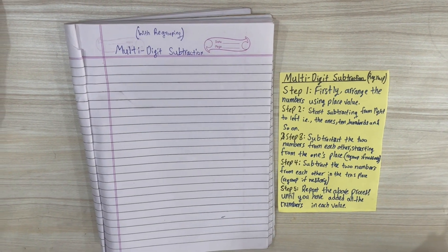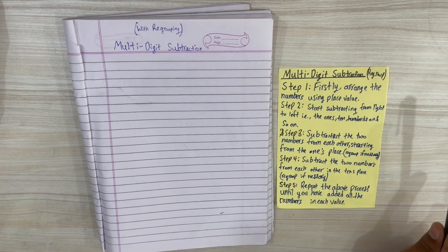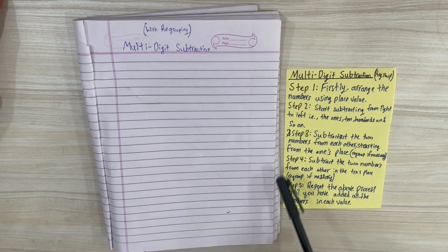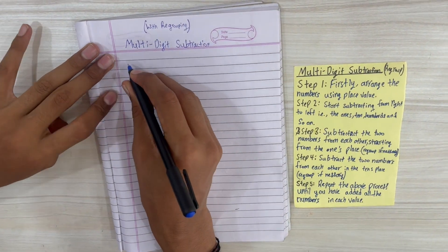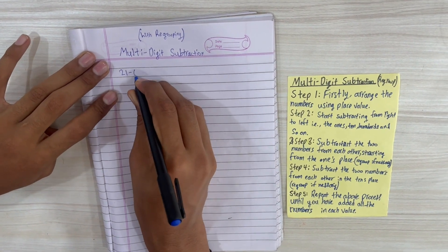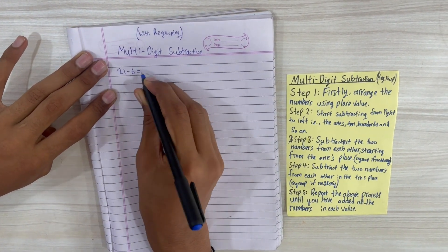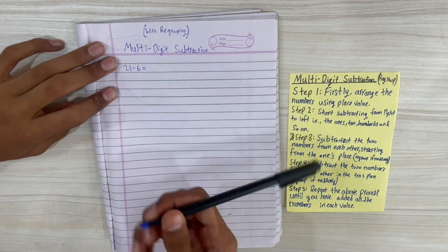Hi guys, welcome back to our channel. Today we're going to be discussing the topic of multi-digit subtraction with regrouping. We're going to follow our notepad with the steps on it, and we'll take a sample question which is 21 minus 6.